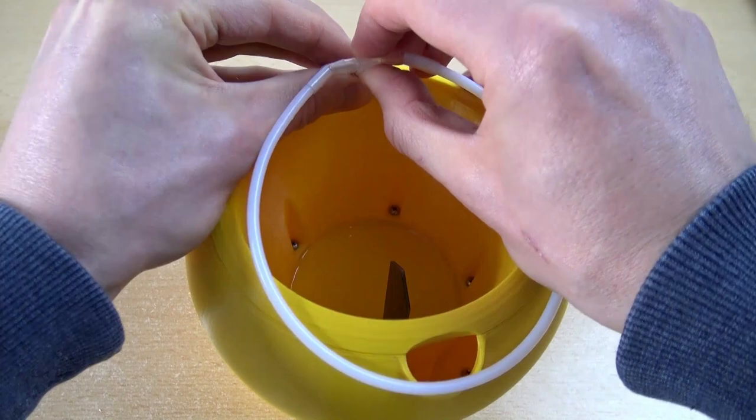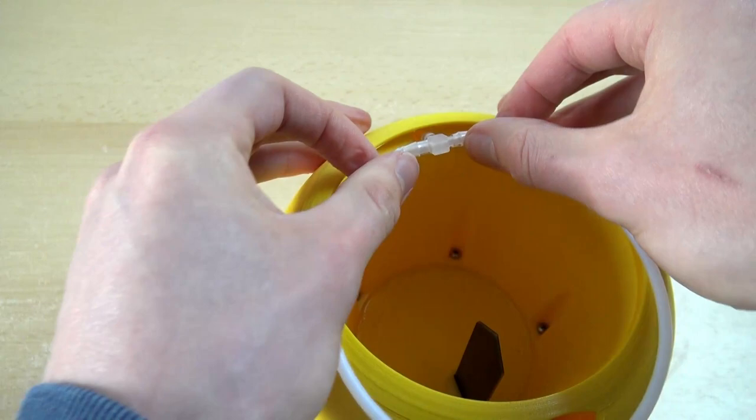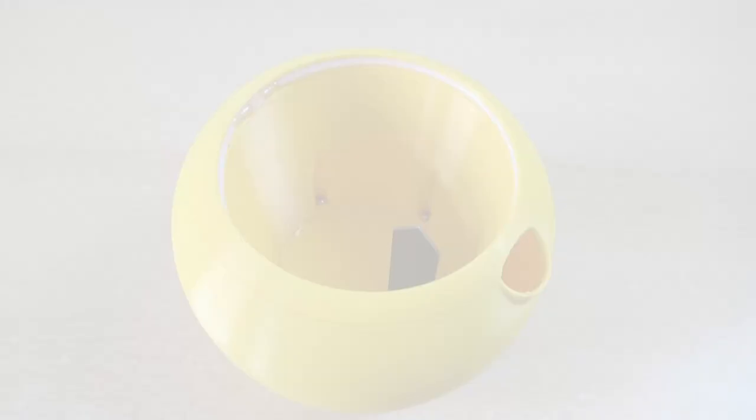To complete the watering ring, connect it to the hose that comes out of the plant pot and press the ring into the circumferential groove.